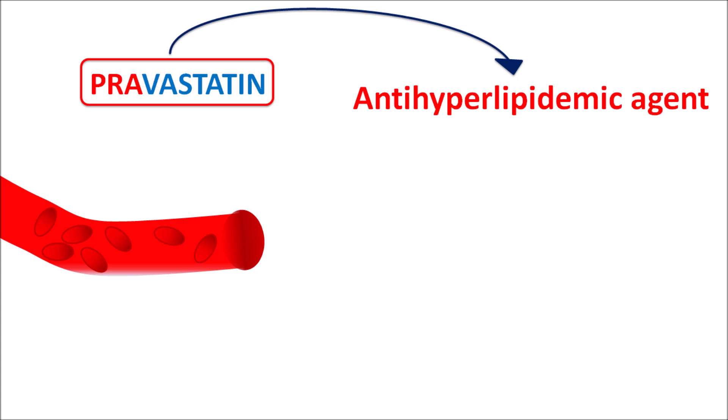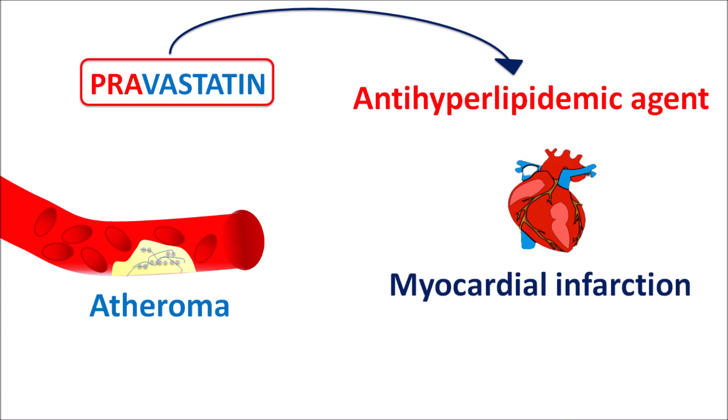When cholesterol levels are excessively increased, it can form a fibrous cap called an atheroma. This atheroma is rich in oxidized cholesterol, along with blood clotting and aggregation of platelets, which forms a dense fibrous cap that blocks blood flow. This atheroma leads to narrowing of blood vessels, resulting in atherosclerosis.